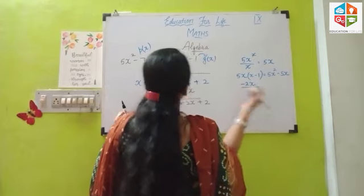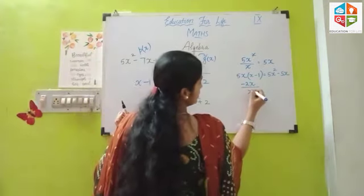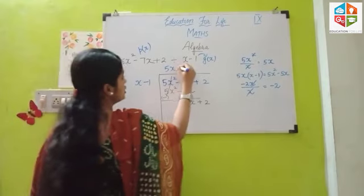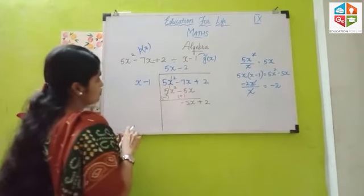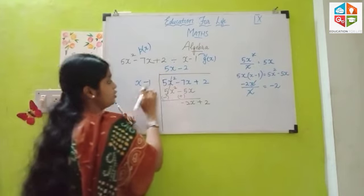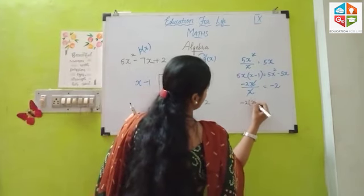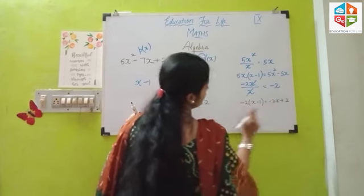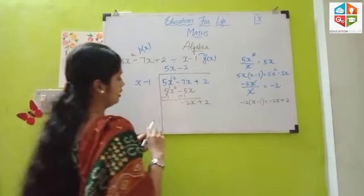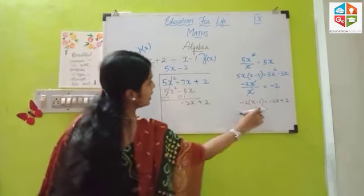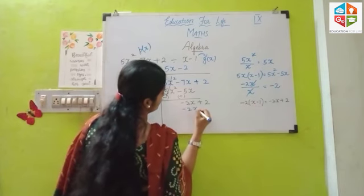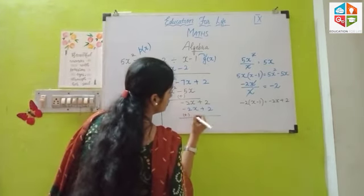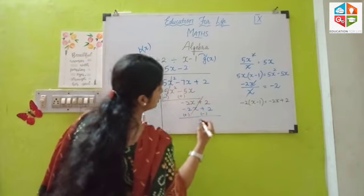Again, this is minus 2X along with the sign. Minus 2X divided by the first term of the divisor X equals minus 2. So minus 2 into X minus 1. Minus 2X plus 2, because minus into minus is plus. Now minus 2X plus 2. Again, change of sign.